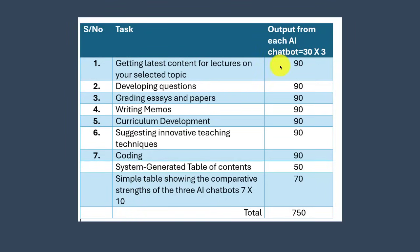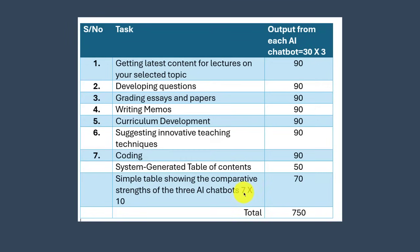For each task — getting latest content, developing questions, grading, memos, curriculum, innovative techniques, and coding — if we see ChatGPT's harvest: 30 marks; Copilot: 30 marks; Gemini: 30 marks; totalling 90 per task across seven tasks. If the system-generated table of contents is missing, you lose 50 marks. The comparison table showing comparative strengths of the three AI chatbots is worth 70 marks — seven tasks at 10 each. That's 750 total. Don't miss a single mark.